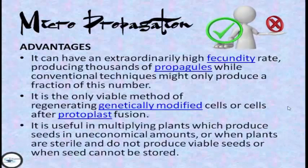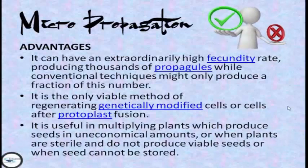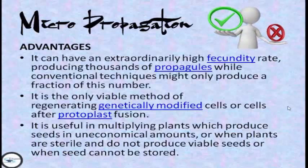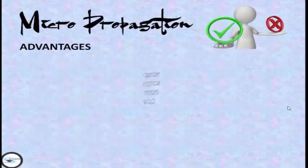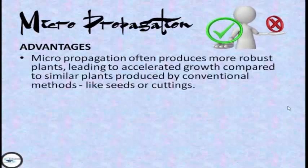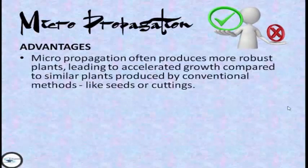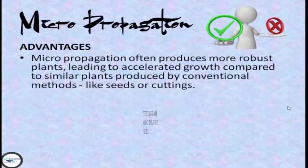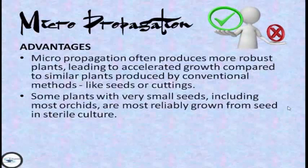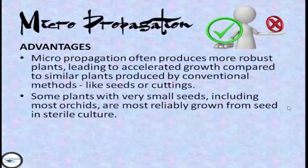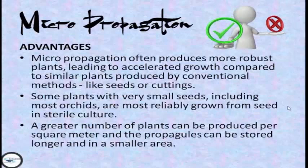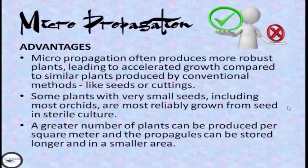It is also useful in multiplying plants which produce seeds in uneconomical amounts, or when plants are sterile and do not produce viable seeds, or when seeds cannot be stored. Micropropagation often produces more robust plants, leading to accelerated growth compared to similar plants produced by conventional methods like seeds or cuttings. Some plants with very small seeds, including most orchids, are most reliably grown from seed in sterile culture. A greater number of plants can be produced per square meter, and propagules can be stored longer and in a smaller area.